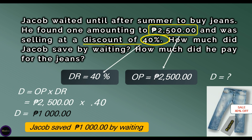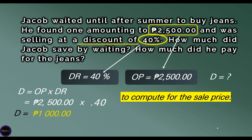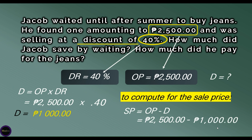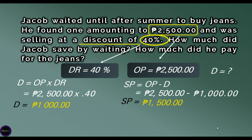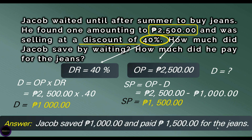But we still have to solve for the sale price. To compute for the sale price, we use the formula: SP equals original price (OP) minus discount (D). Substituting: 2,500 pesos minus 1,000 pesos equals 1,500 pesos. Therefore, Jacob saved 1,000 pesos and paid 1,500 pesos for the jeans.